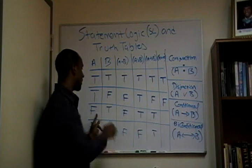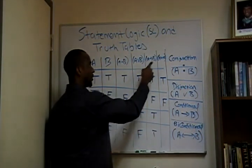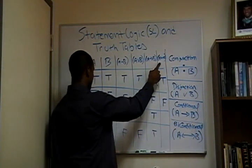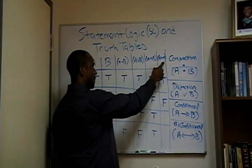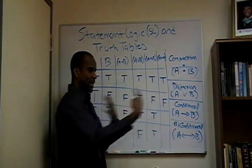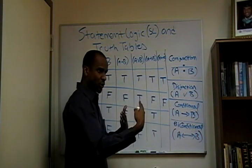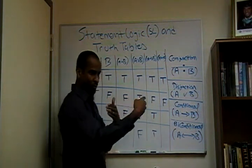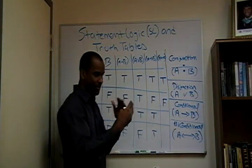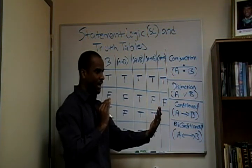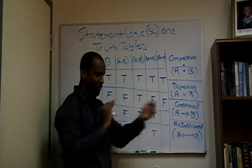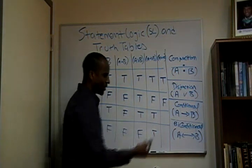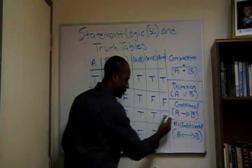Similarly, it would be the same. If I'm projecting false — if I'm saying that A is false and B is true — there's not an agreement between both sides of this biconditional, this mirror. So that's false as well.